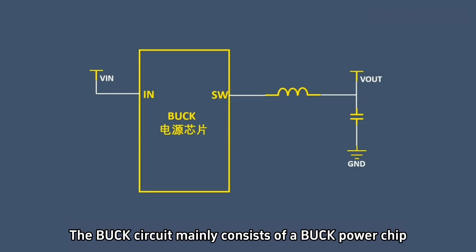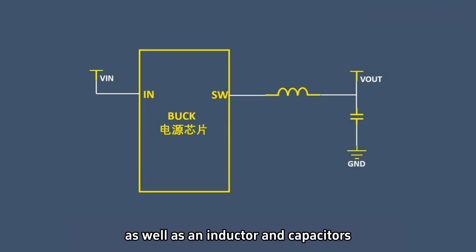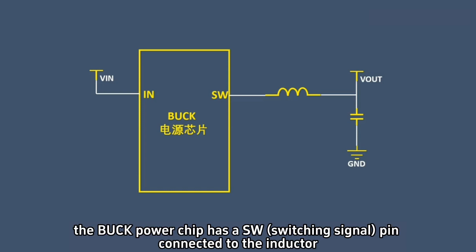The buck circuit mainly consists of a buck power chip, as well as an inductor and capacitors. Generally, the buck power chip has a SW pin connected to the inductor.